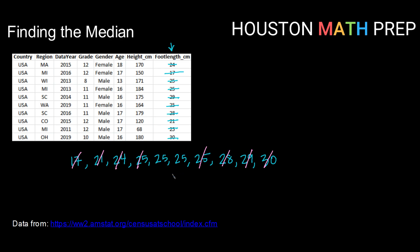Now notice if I were to cross out my next two, I would be left with nothing. That is because I have an even number of data values. In that case, I'm going to take the two center data values and find their average.